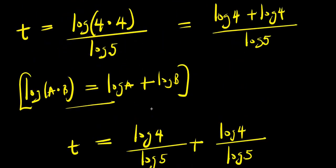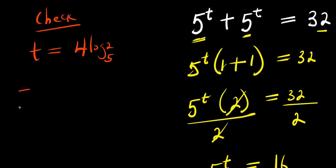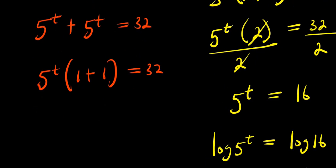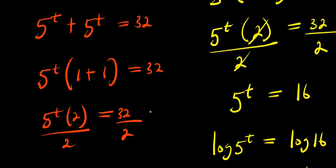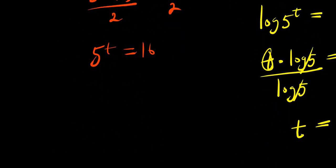The next thing we can do is check by inserting that value for t. We have t equals 4 log 2 to the base of 5. So substituting back into 5 power t plus 5 power t equals 32, we factor out 5 power t, giving 5 power t times 1 plus 1 equals 32. Dividing both sides by 2, we get 5 power t equals 16, and t is 4 log 2 to the base of 5.